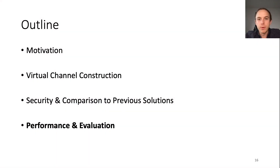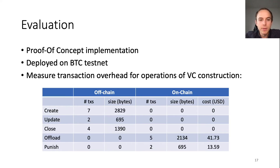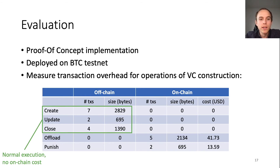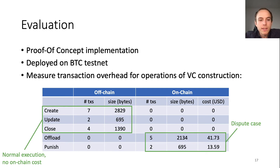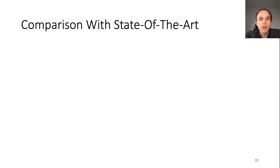Let me talk about the evaluation of the paper. We implemented a proof of concept that creates the raw Bitcoin transactions needed for the construction and deployed them on the Bitcoin testnet to showcase compatibility with the current system. We measured the transaction overhead in terms of size, number of transactions, and on-chain fees. For the three operations create, update, and close, there are no on-chain fees. For the offload and punish cases — which happen only in a dispute or if someone wants to offload the channel — we do have some on-chain fees. Notably, the punish operation costs roughly the same as closing a payment channel.